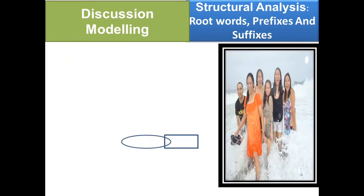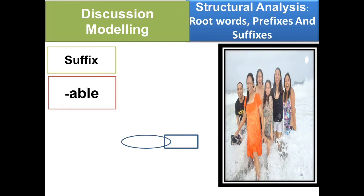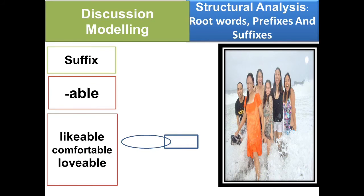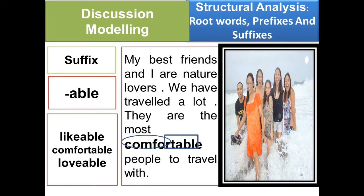Let's have the last suffix word, 'able.' Example words: likeable, comfortable, lovable. Example sentence: My best friends and I are nature lovers. We have traveled a lot. They are the most comfortable people to travel with. As you can see, the underlined word is comfortable. The root word is comfort, and the suffix is 'able.' Comfortable means providing physical ease and relaxation.